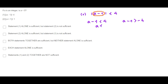Solving for a in the first case, a is less than 5. Solving for a in the second case, a is greater than negative 3. Therefore, a is an integer that lies between negative 3 and 5.